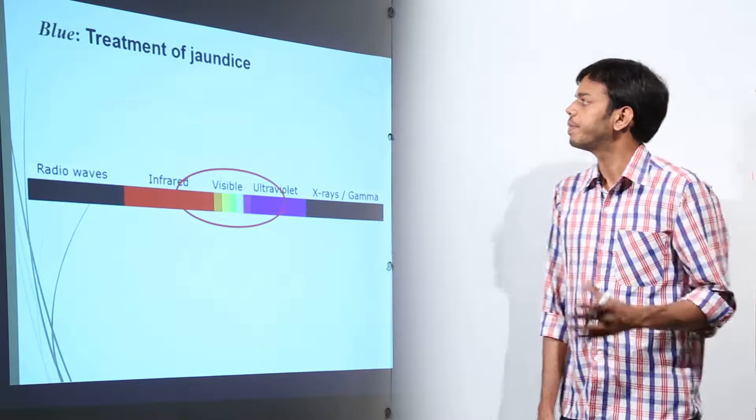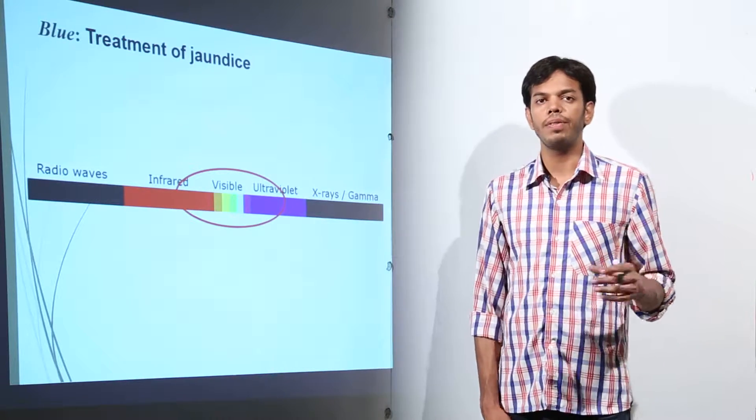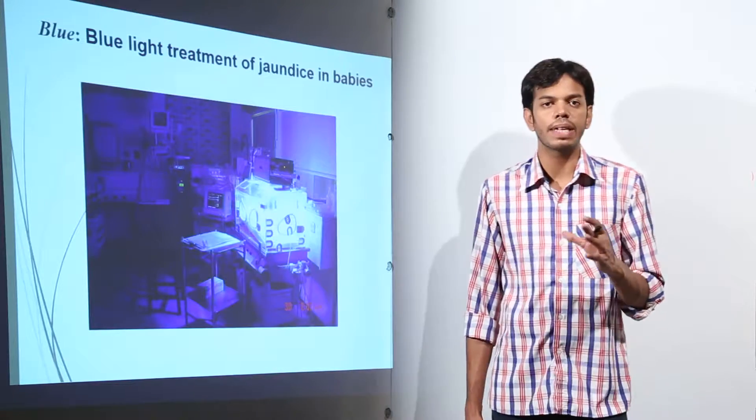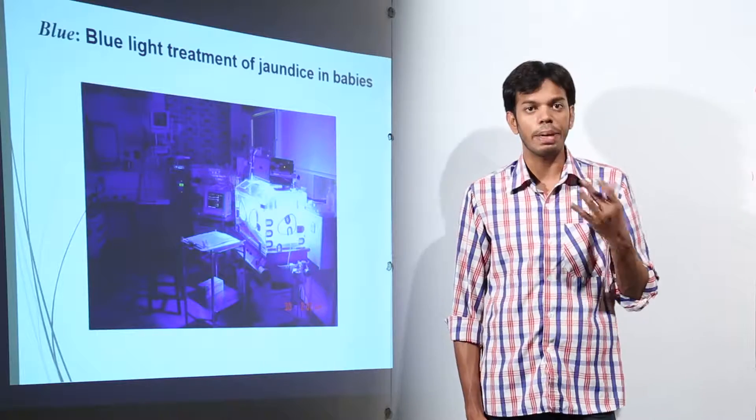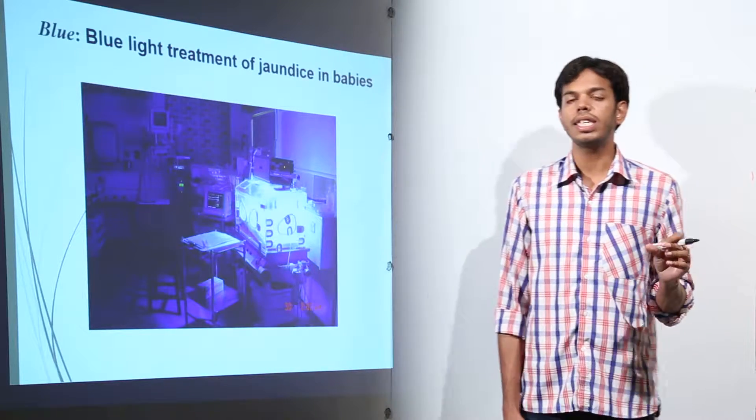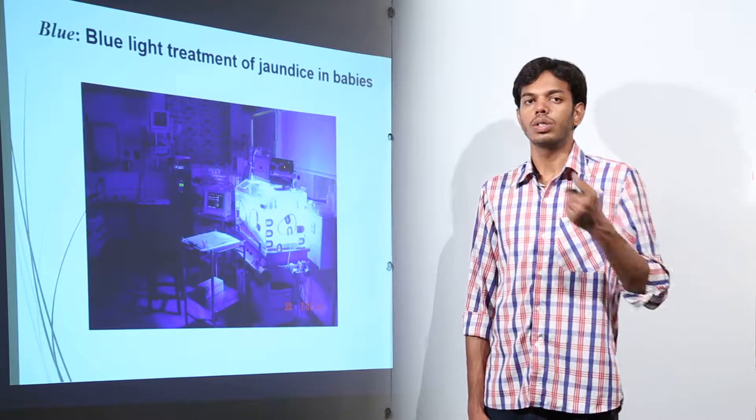Then visible light is used in treatment of jaundice. For example, when in premature babies or newborn babies, they are sometimes a bit pale in color. Why pale in color? Because of the presence of excess of bilirubin. Bilirubin is the yellow pigment present in bruises.